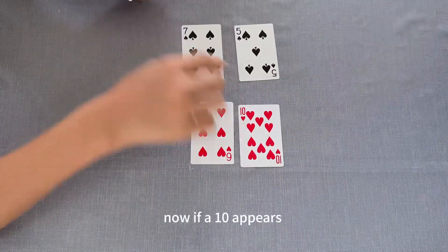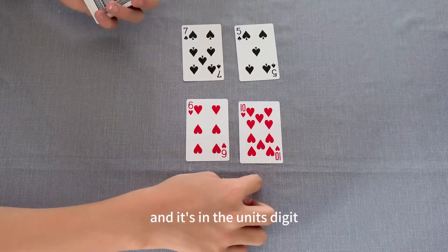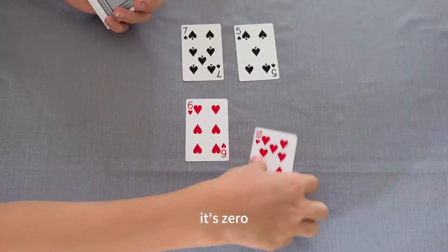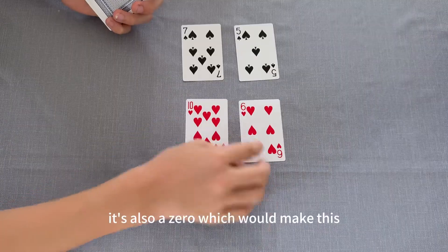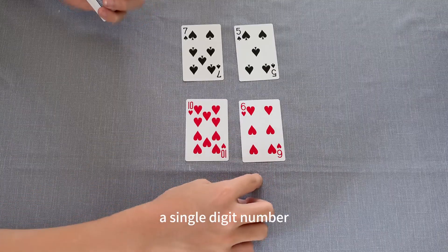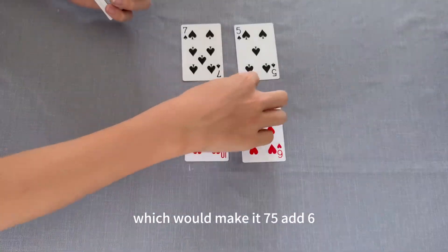Now, if a 10 appears and it's in the unit's digit, it's a 0. And if it's in the 10's digit, it's also a 0, which would make this a single-digit number, which would make it 75 add 6.